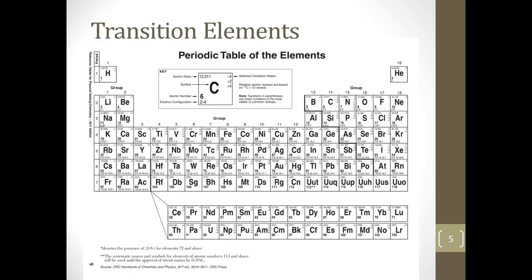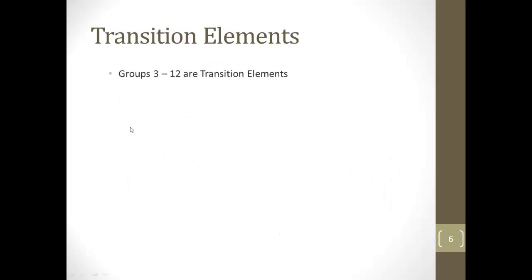Next we're going to take a look at the transition metals, and they are going to be from group 3 to group 12. These are referred to as the transition elements. They're also sometimes called transition metals because they're all metals. Typically, they are hard solids with high melting points. These are important.